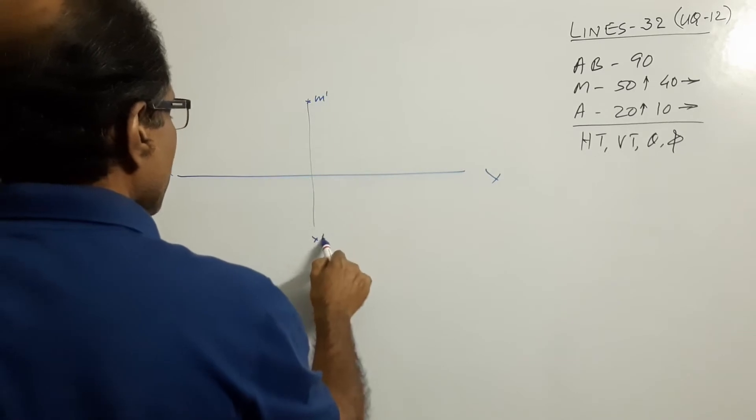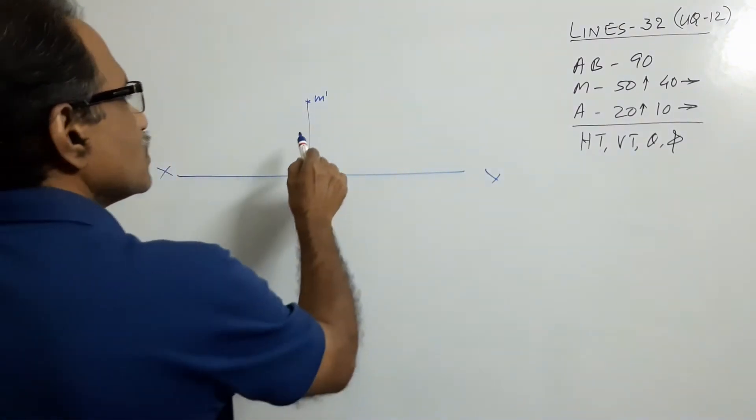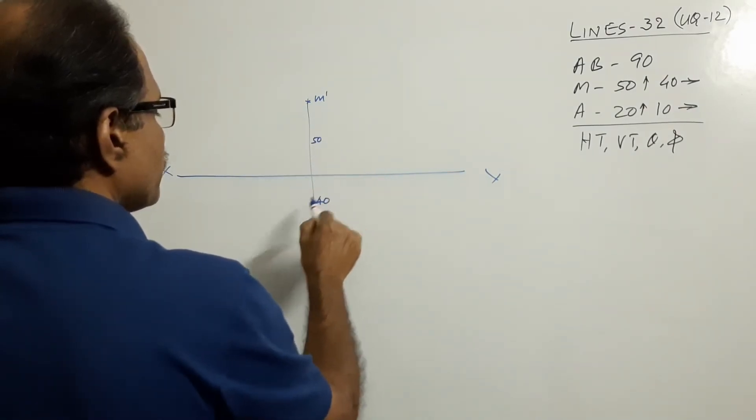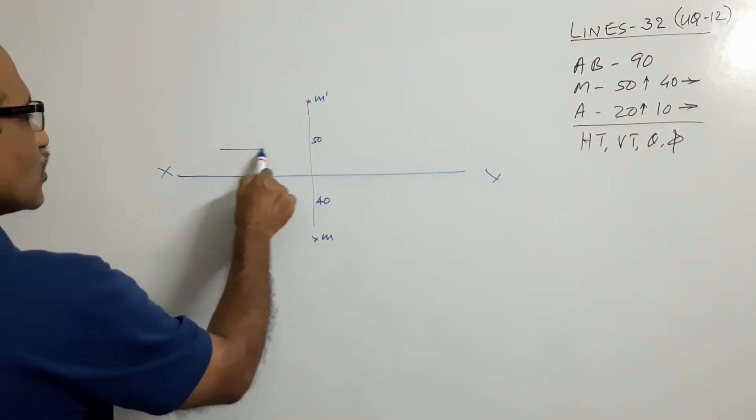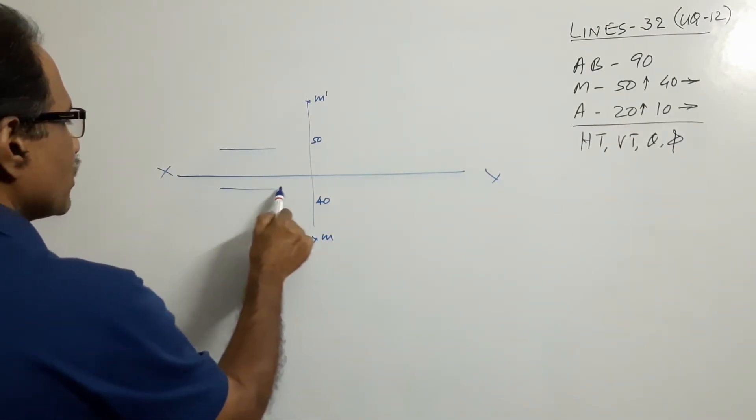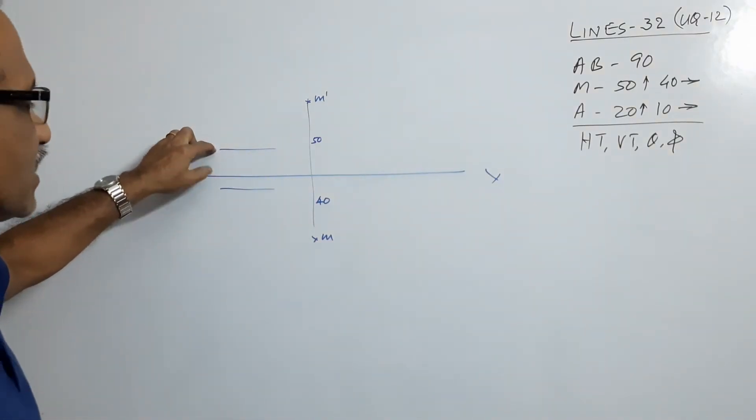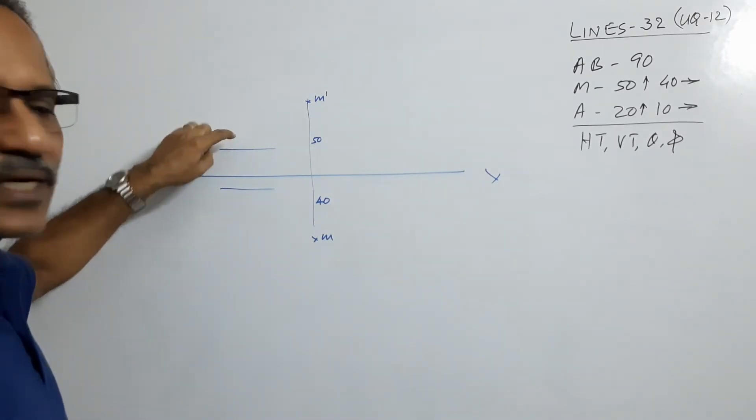Locate M dash, M. How much is this? 50mm. 40mm. 20mm above XY line, draw a horizontal line. 10mm below XY line, draw a horizontal line. This line contains A dash and this line contains small A. Draw A dash on the A line A.